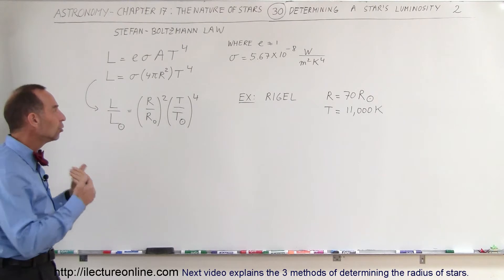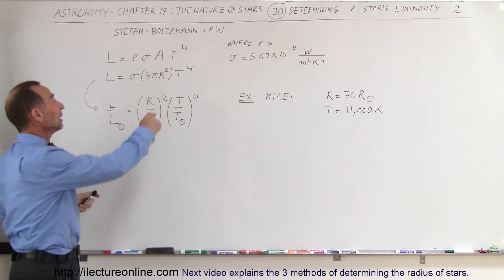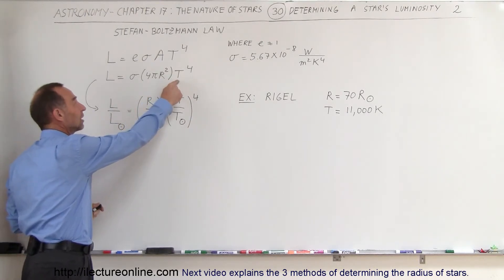We can actually do that in terms of how luminous it is relative to the sun. We can come up with absolute numbers by putting in the actual radius in meters and the actual temperature in Kelvin.